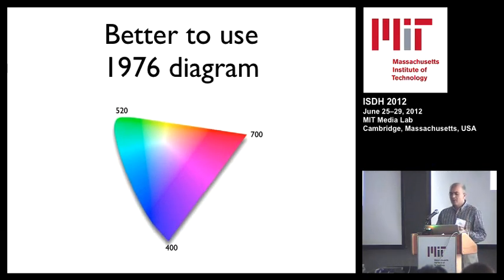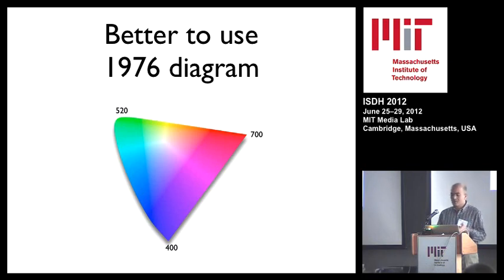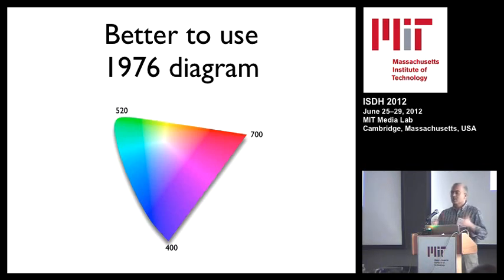It's generally better to use the 1976 diagram. The 1931 diagram is now about 88 years out of date; the 1976 diagram is only 35 years out of date, but that's the latest one. It gives a better representation of how the eye distinguishes between different colors.